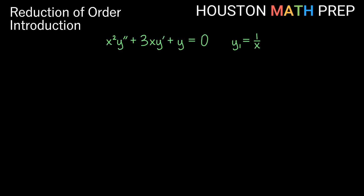We're going to work through the method once, explaining as we go. We have x squared y double prime plus 3x y prime plus y equals zero — that's our second-order homogeneous equation. We're given that 1 over x is a solution, so that's our y1. Remember, we think about y equals u times y1, so in this case y is equal to u times 1 over x. That takes care of the substitution for y.